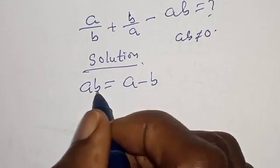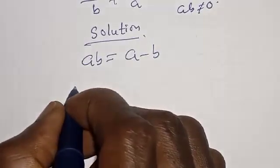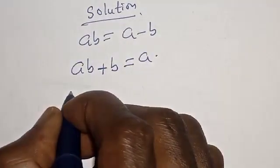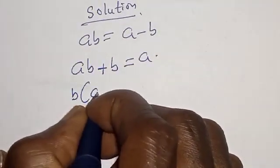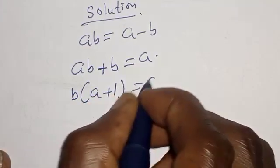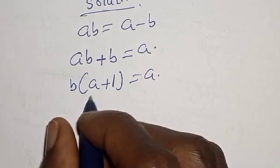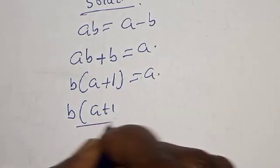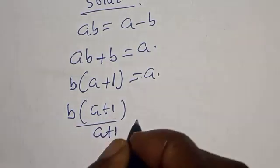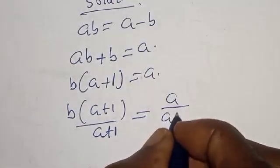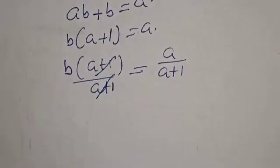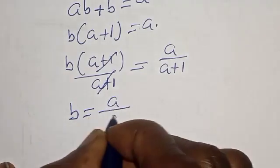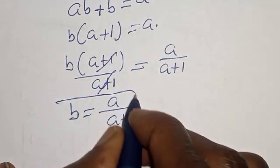From this equation, let's make B the subject of the formula. We have AB plus B is equal to A. Now B is common, so B times (A plus 1) is equal to A. Dividing both sides by A plus 1, B is equal to A over A plus 1.